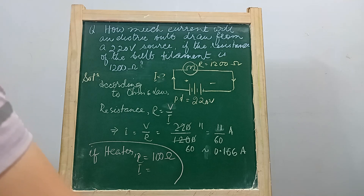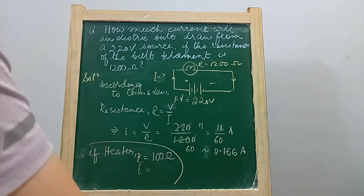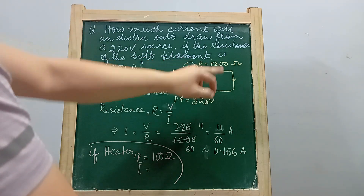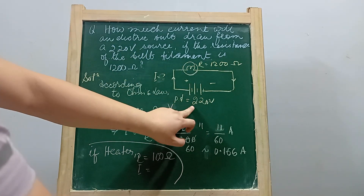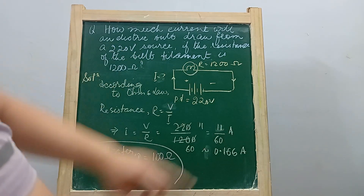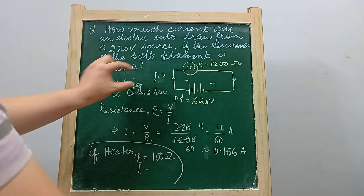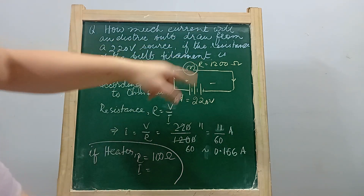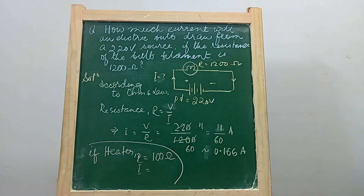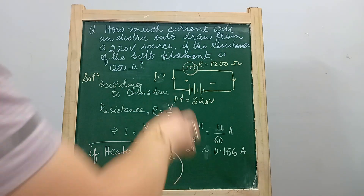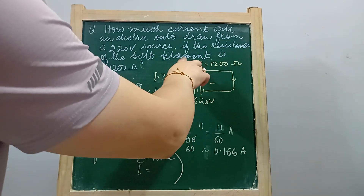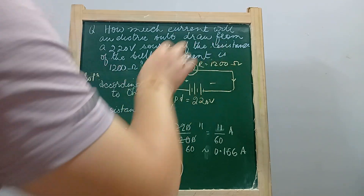The question is asking how much electric current will flow through this bulb. What you are given is the resistance R = 1200 ohms and the potential difference V = 220 volts. What you need to calculate is the current that will flow — how much current the bulb will draw. The amount of current drawn by an appliance depends on the resistance of the conductor.